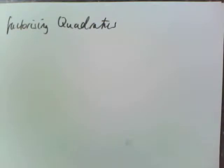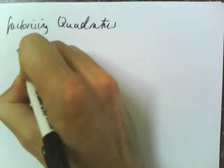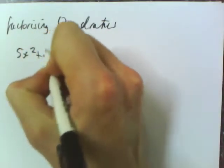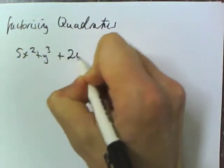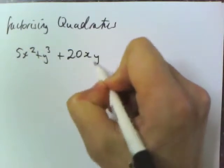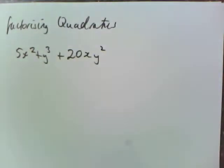So first and foremost, the whole idea behind factorising quadratics, if I do question 1a with you, 5x squared plus y cubed plus 20xy squared, the whole idea here is trying to work out what's the same between these two.